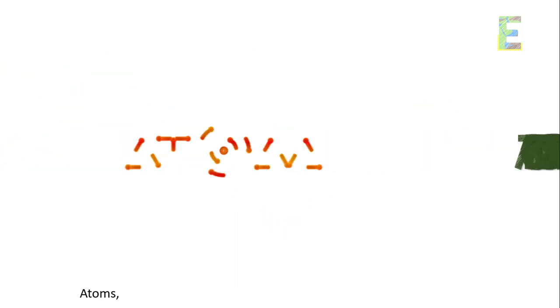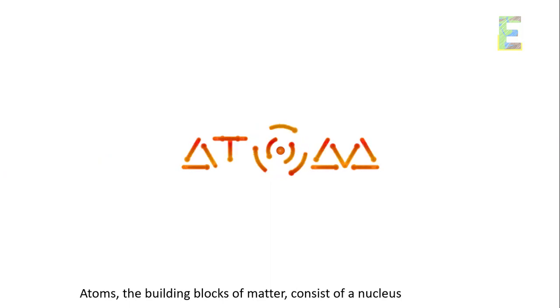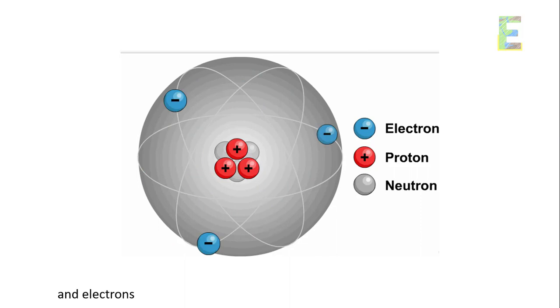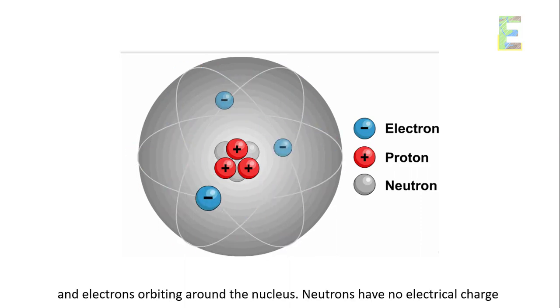Atomic structure. Atoms, the building blocks of matter, consist of a nucleus at the center which contains protons and neutrons, and electrons orbiting around the nucleus.